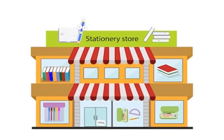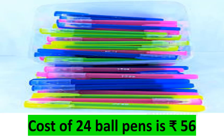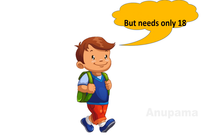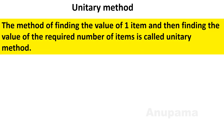Here is a stationary store. One student wants to purchase ball pens, but the stationary storekeeper told that the cost of 24 ball pens is Rs. 56. But that student needs only 18 ball pens. Let us help him. We need to understand the unitary method to solve his problem. The method of finding the value of one item and then finding the value of the required number of items is called the unitary method.